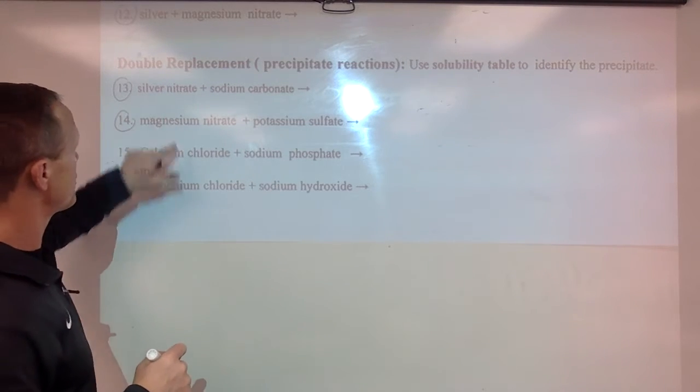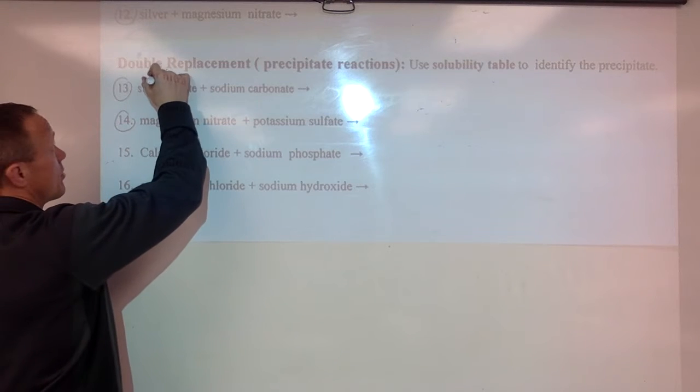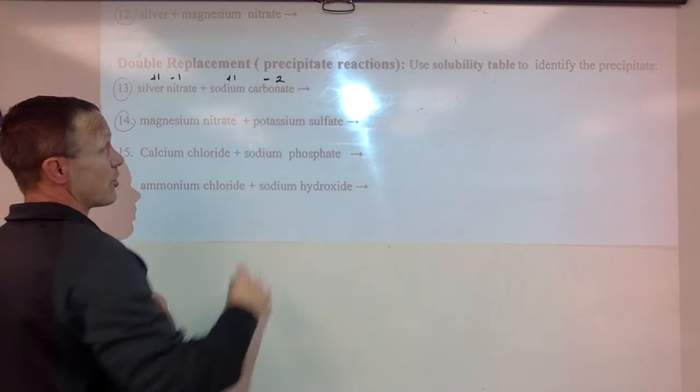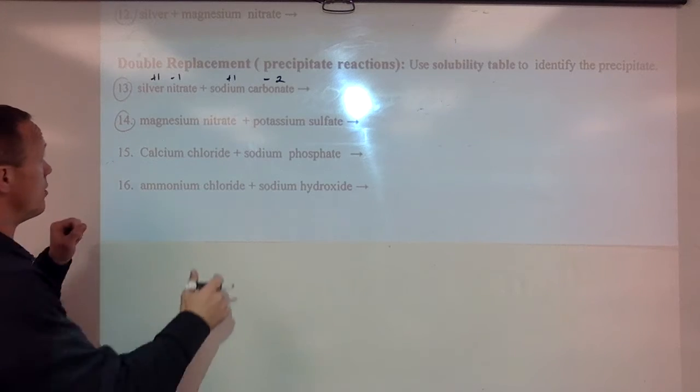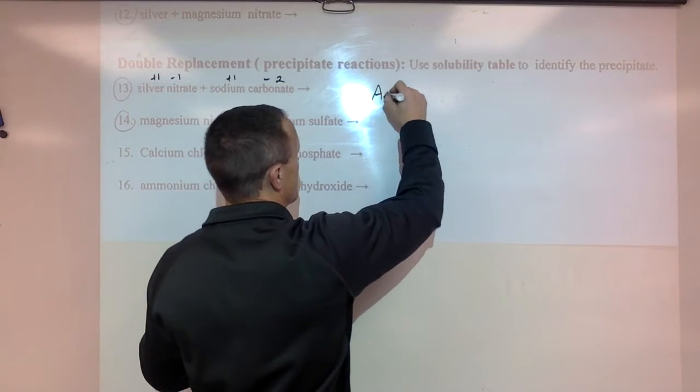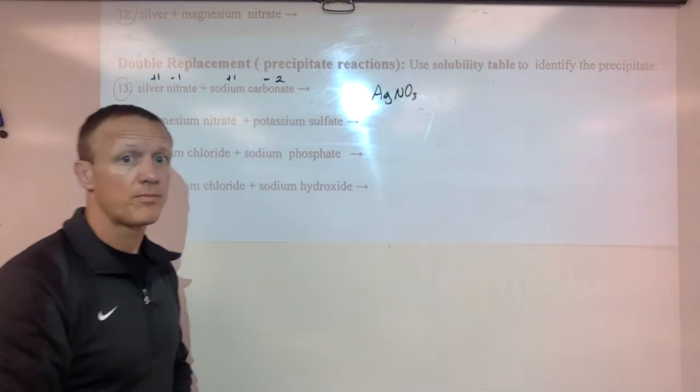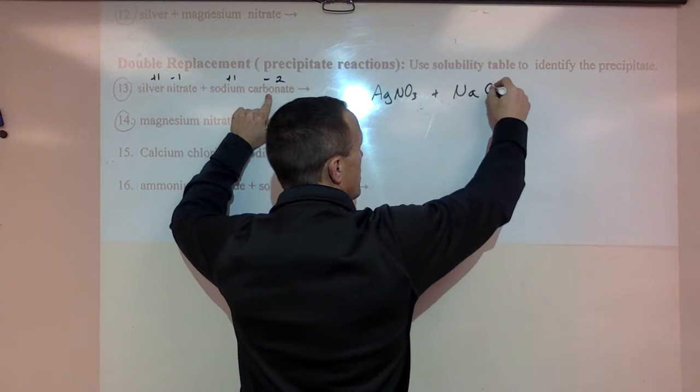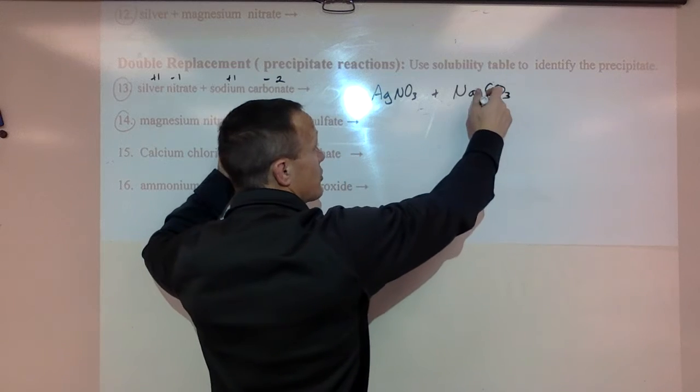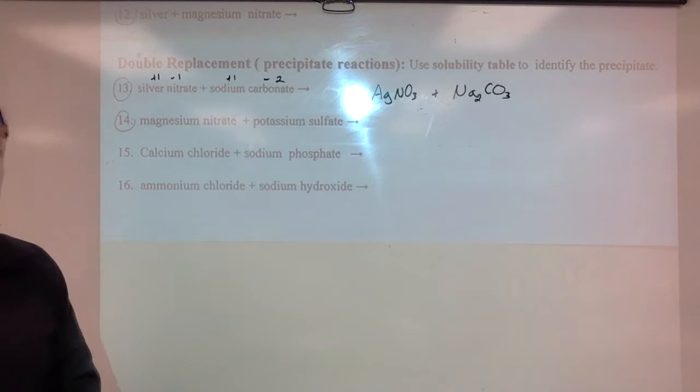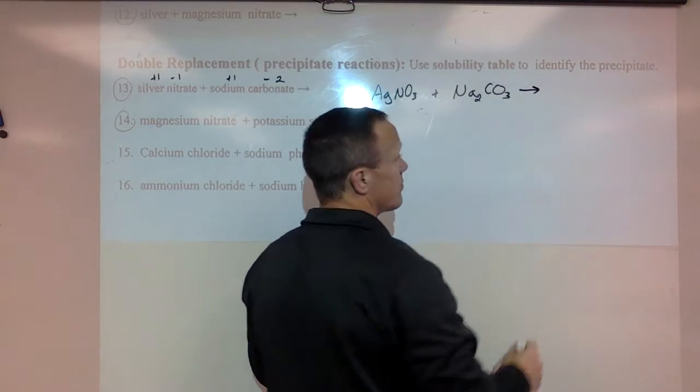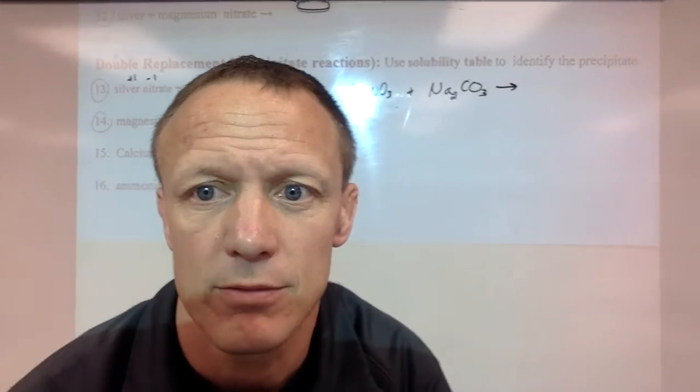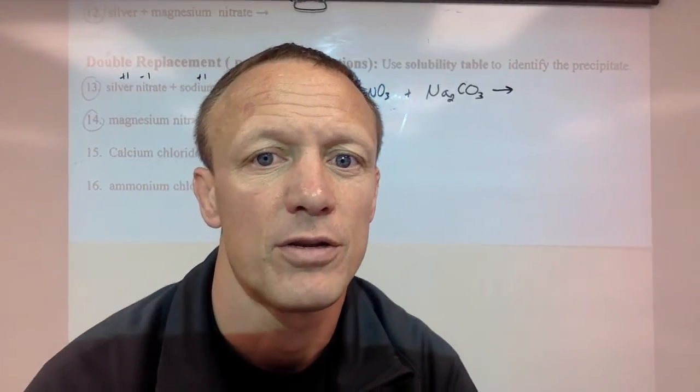So I'll do these two here. So silver nitrate which is a plus one and a minus one charge with sodium carbonate which is a plus one and a minus two charge. So you're going to need to know all your charges for these. I'm going to write this over here. So we got silver nitrate AgNO3 plus sodium carbonate. Sodium carbonate plus one minus two so we need to put a two with the sodium. So they're going to react to form.